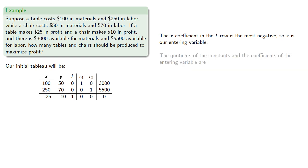The quotients of the constants of the coefficients of the entering variable are calculated, so we'll pivot on the second row of the x entry, making c2 our exiting variable.